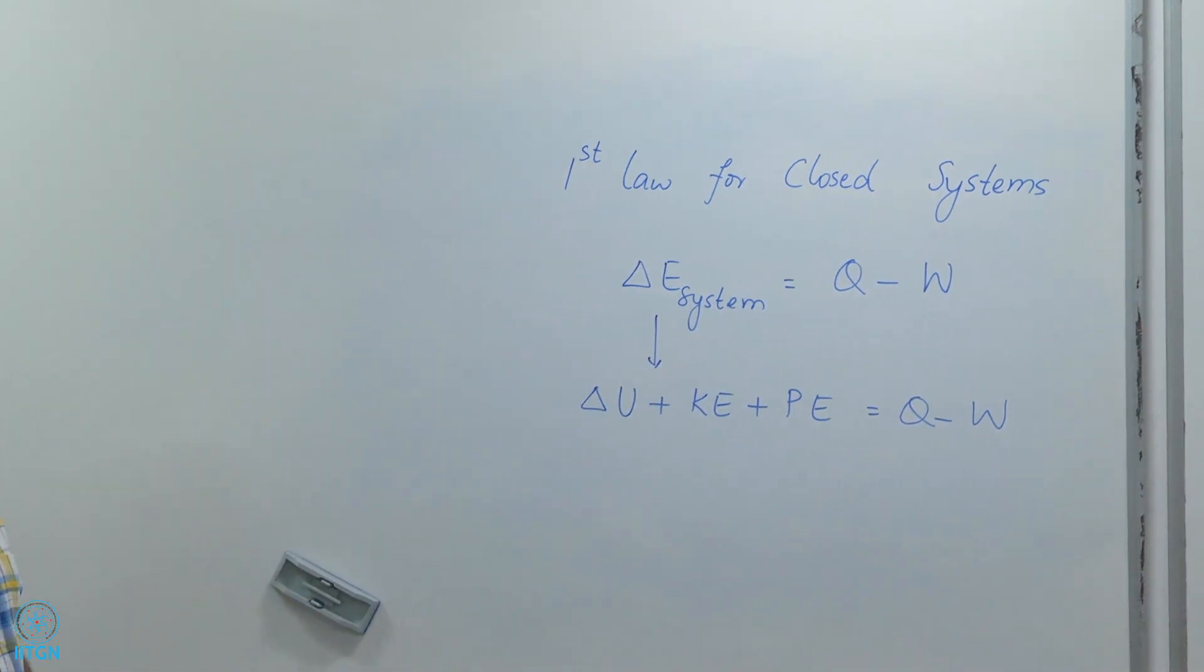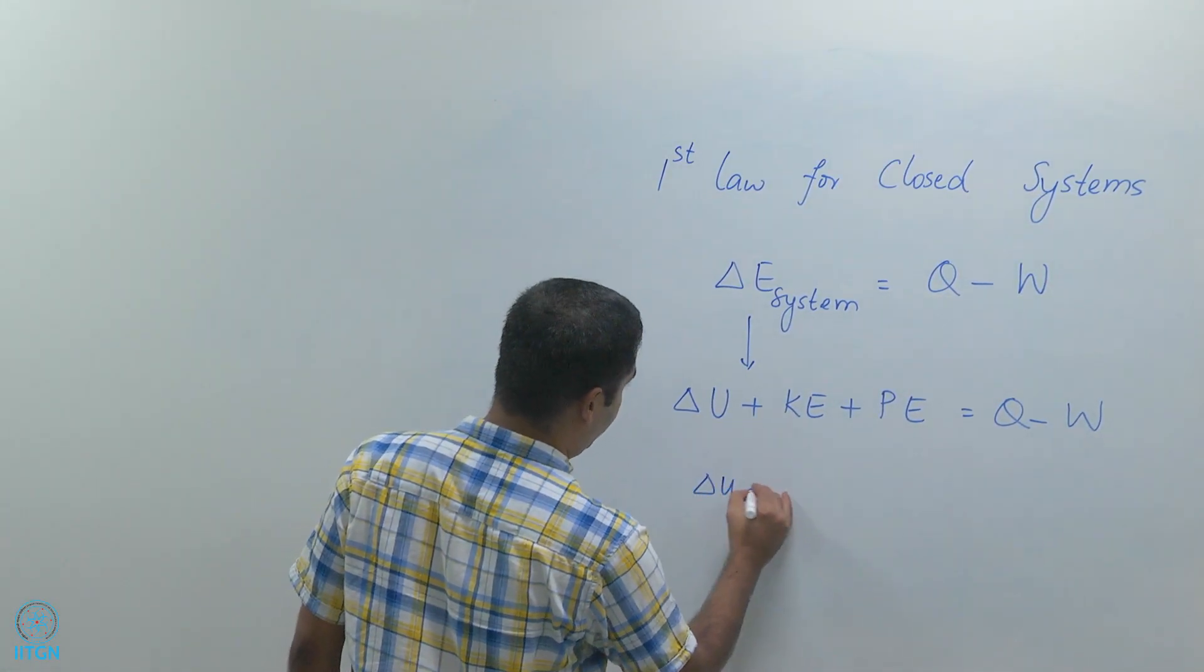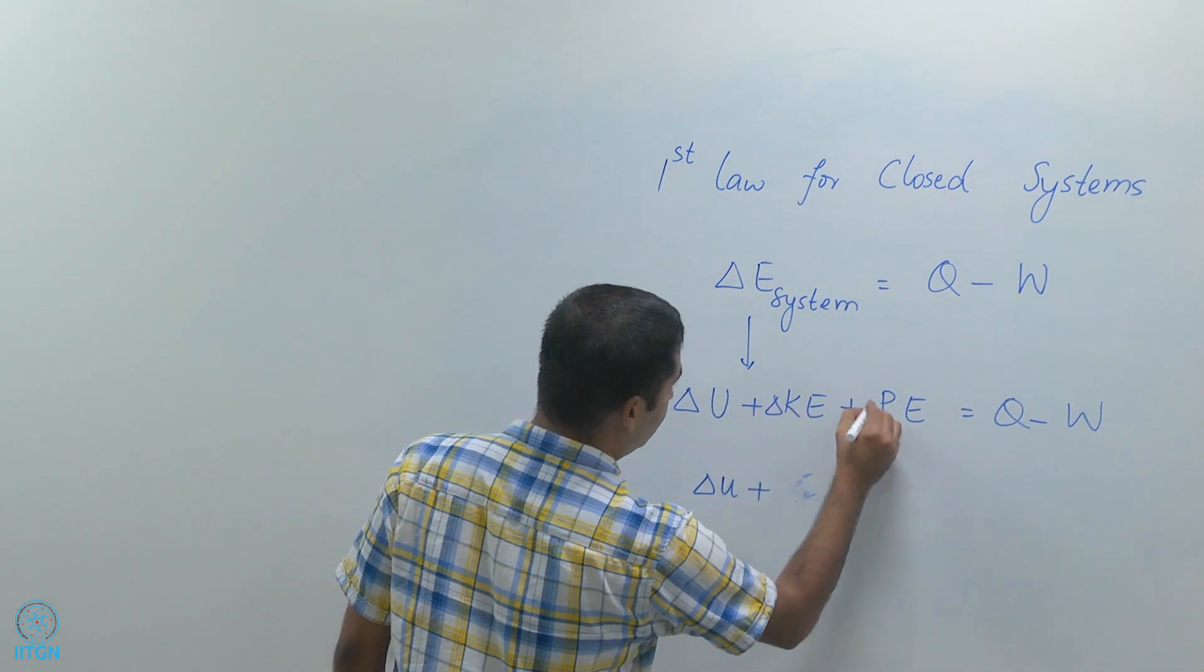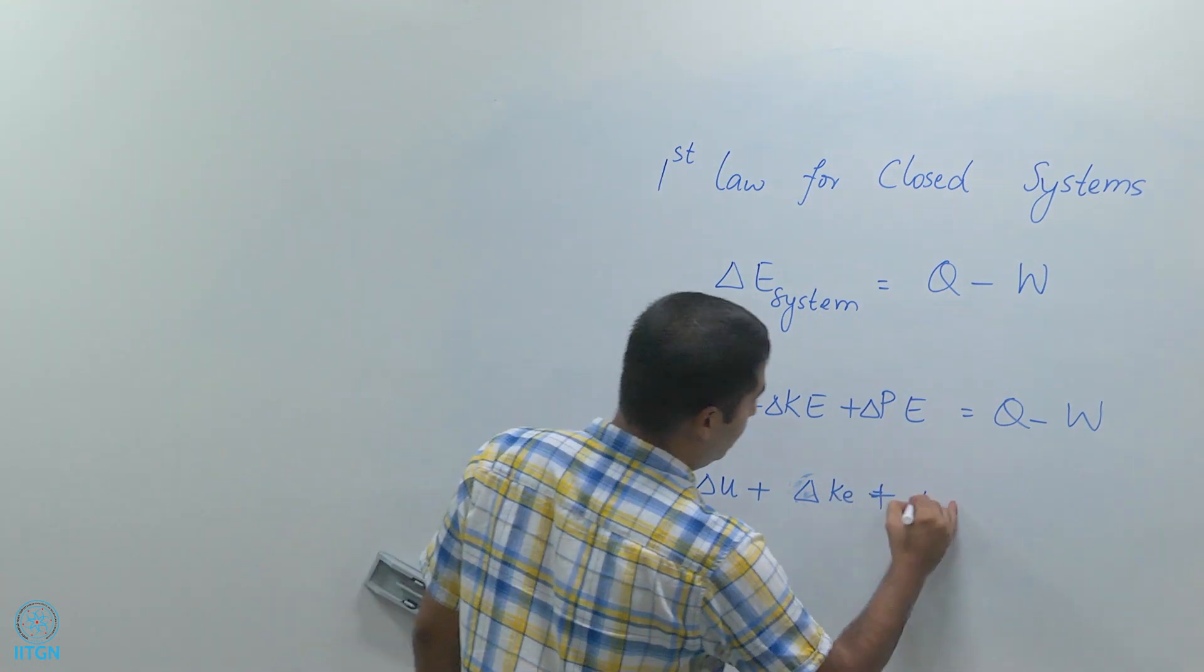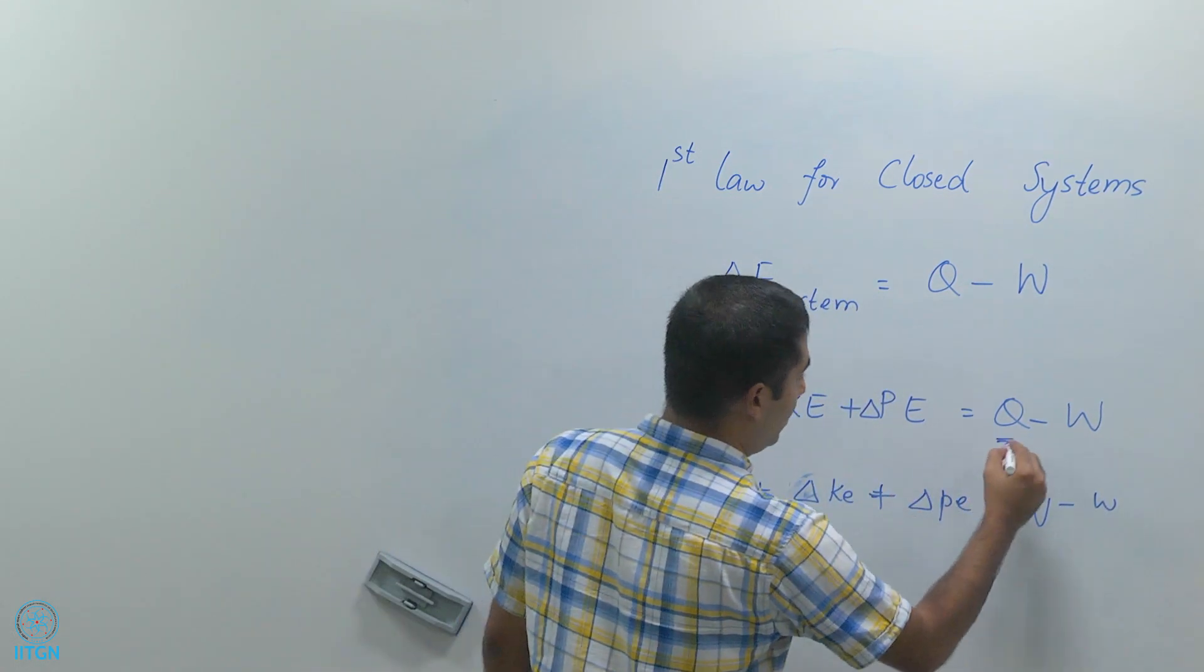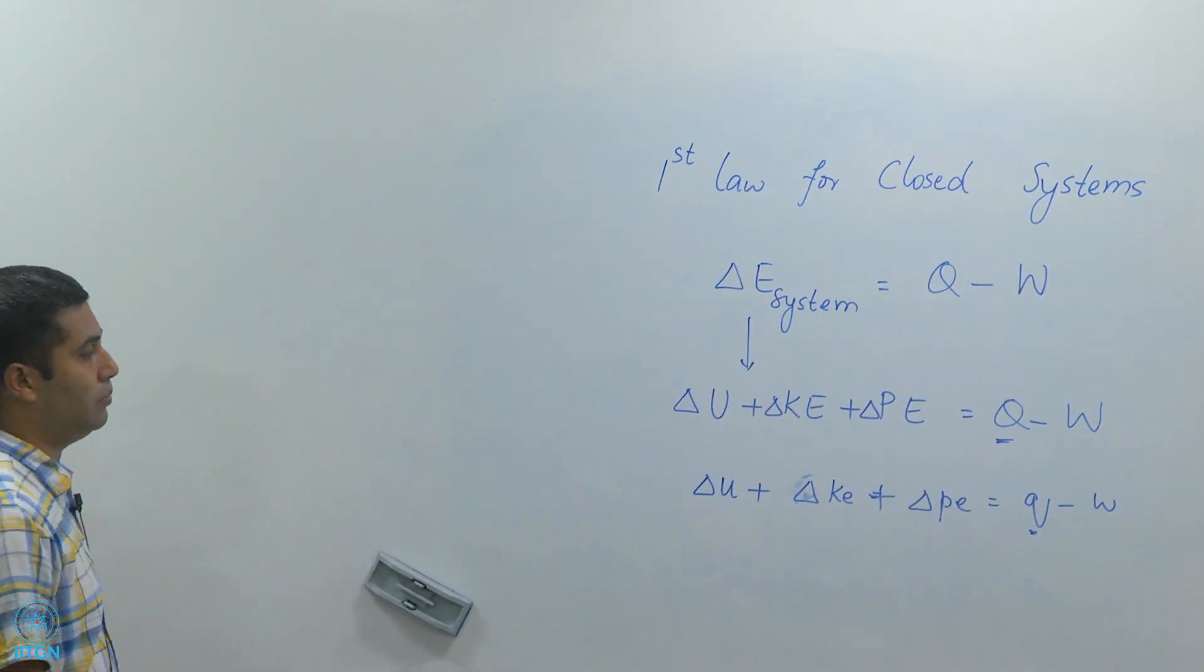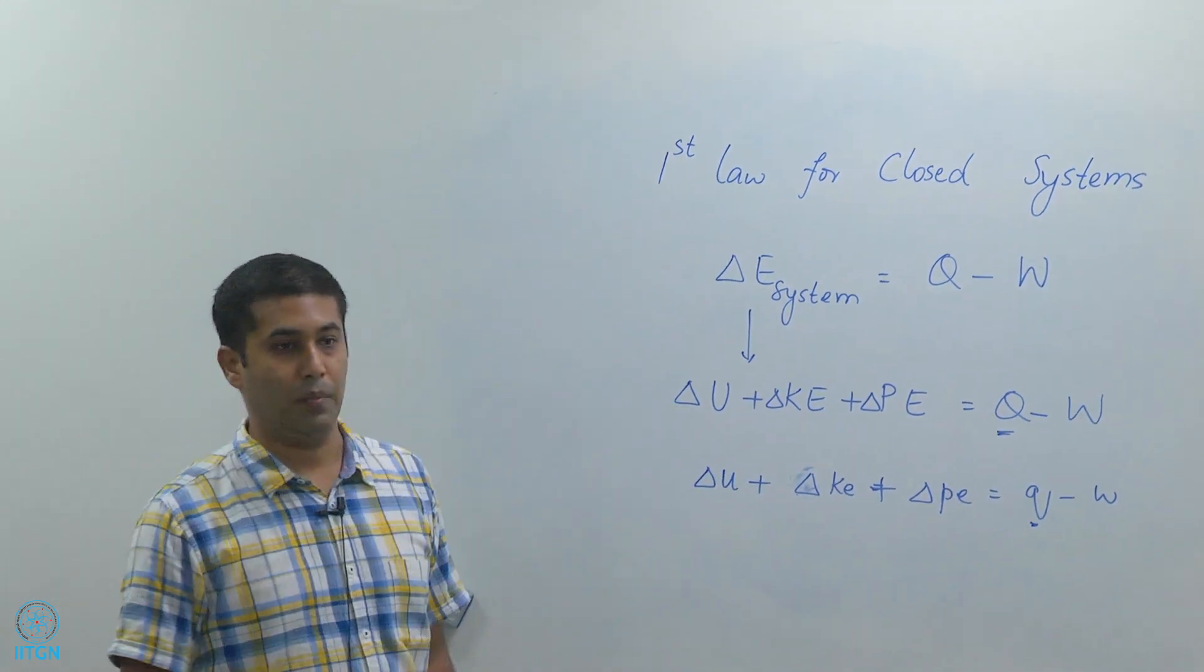I can also write this on a per unit mass basis. I can write this as delta u plus delta ke plus delta pe equals q minus w, where Q is capital Q per unit mass and small w is work done per unit mass.